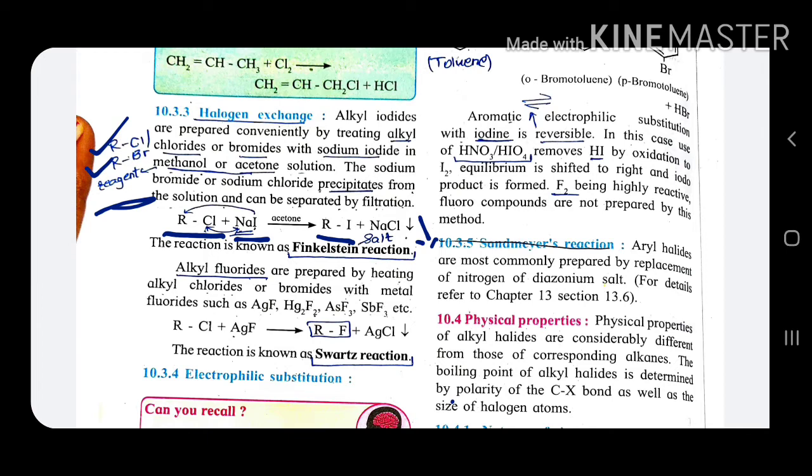Markovnikov's rule means addition of hydrogen halide to alkene. Notes should be written properly, clear arrangement. Halogen exchange has Finkelstein reaction. In that, RCl and NaI, that is sodium iodide, these two react.